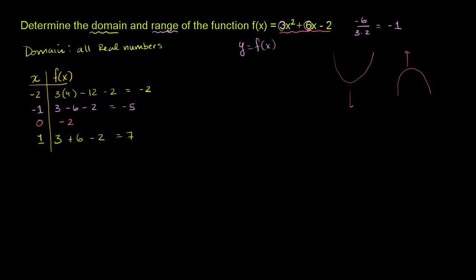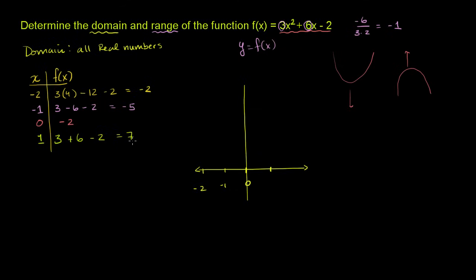That gives us enough points to scaffold what this graph will look like. Let me draw the axes. The x values go from negative 2 to positive 1, and the y values range from negative 5 all the way to positive 7. Let me label the axes accordingly.